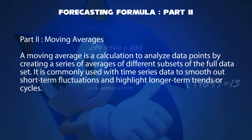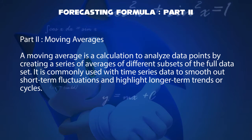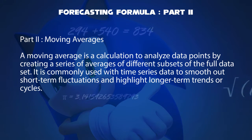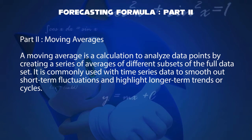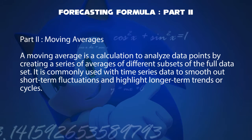Part 2: The Moving Averages. A moving average is a calculation to analyze data points by creating a series of averages of different subsets of the full data set. It is commonly used with time series data to smooth out short-term fluctuations and highlight longer-term trends or cycles.